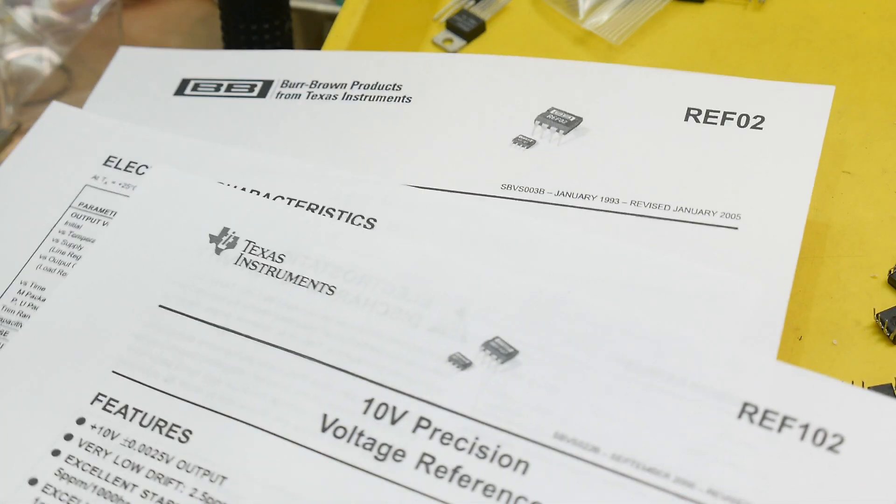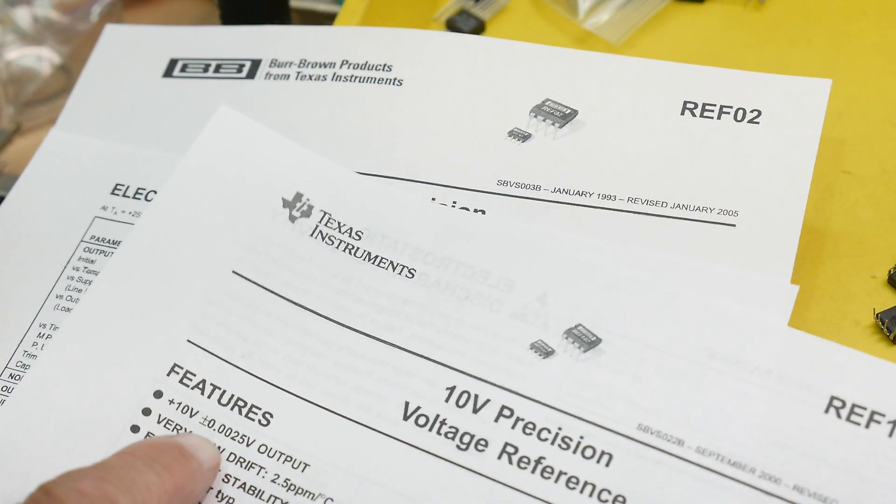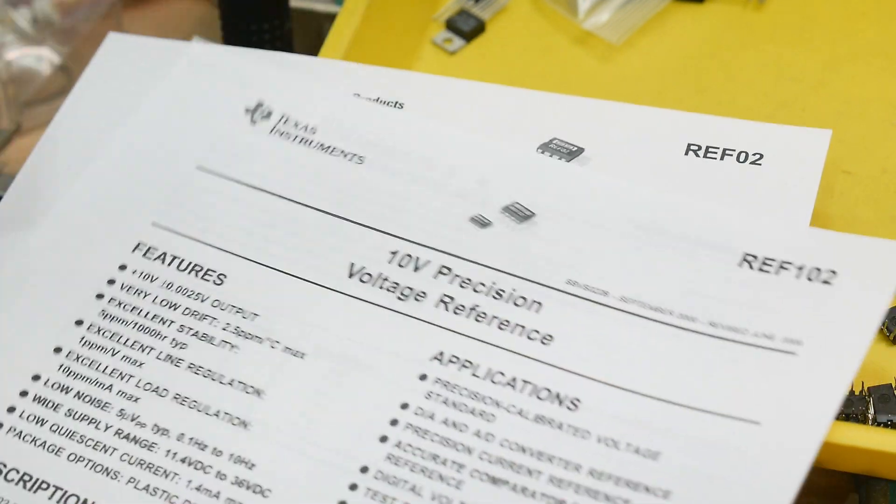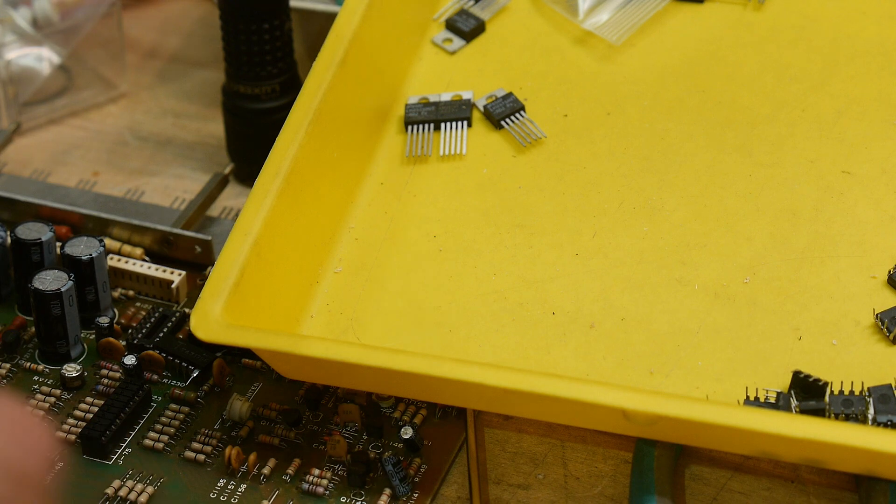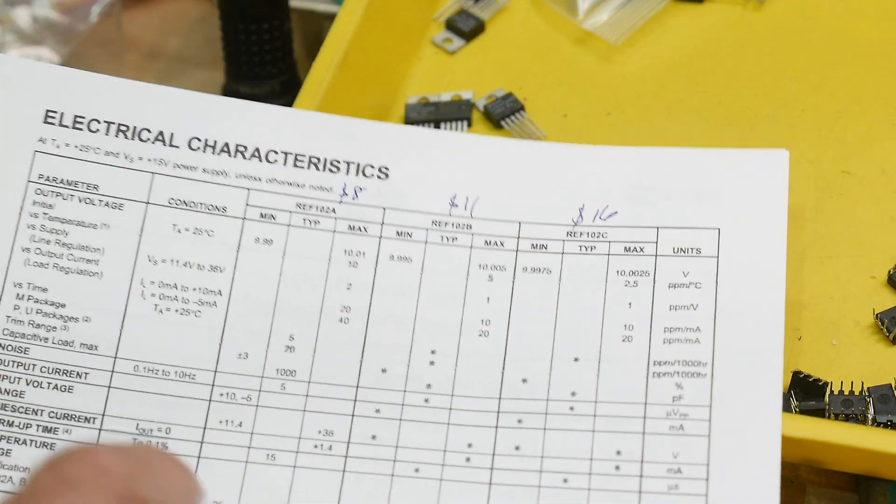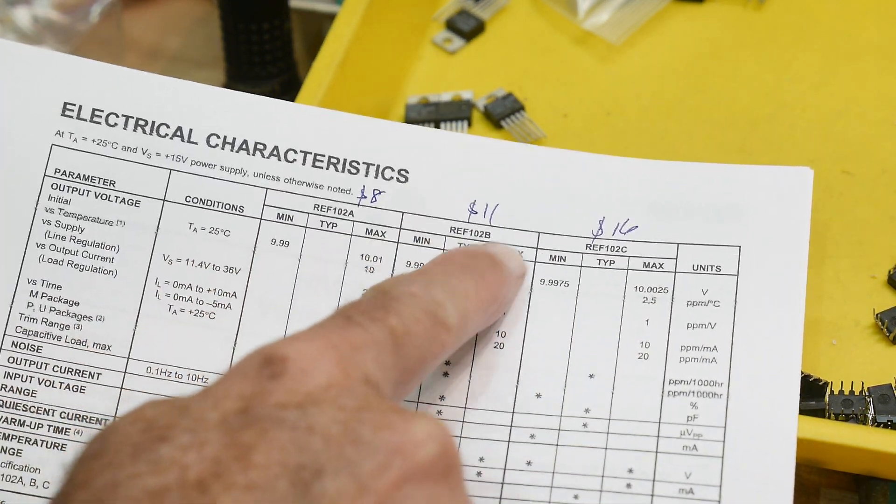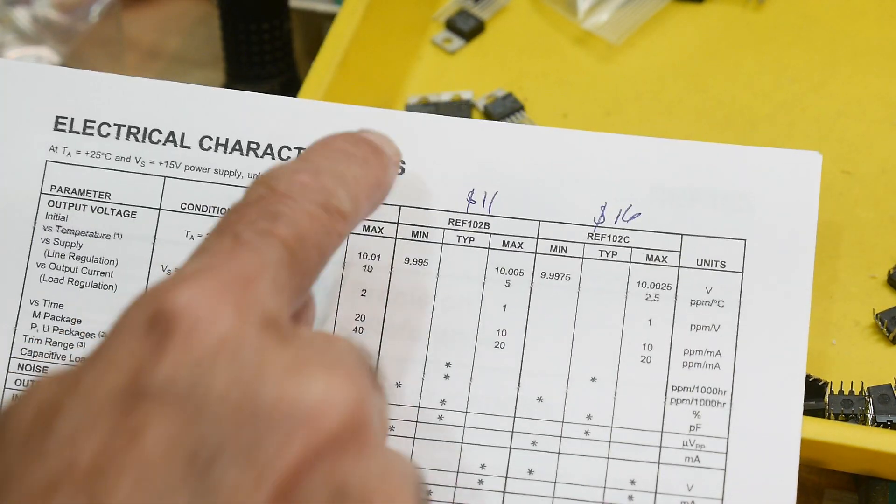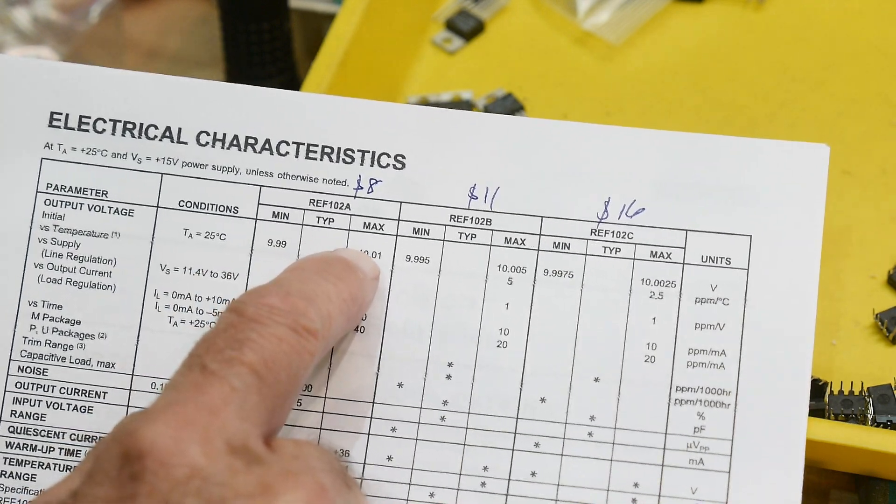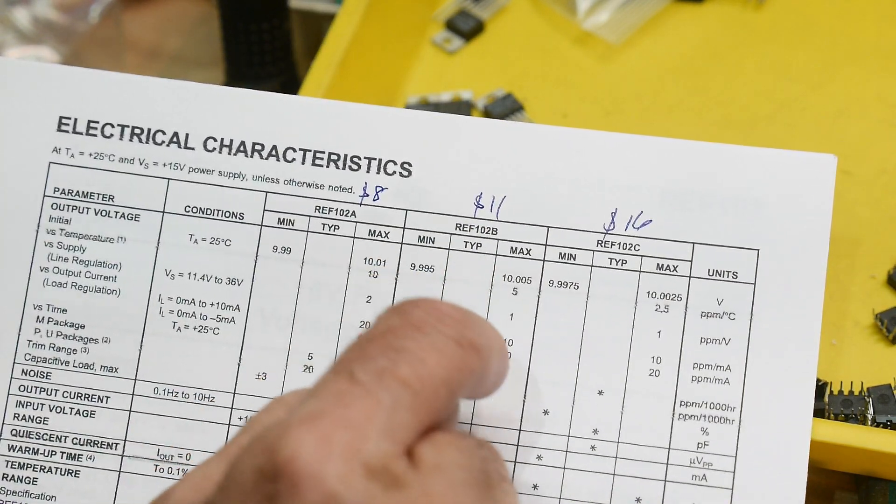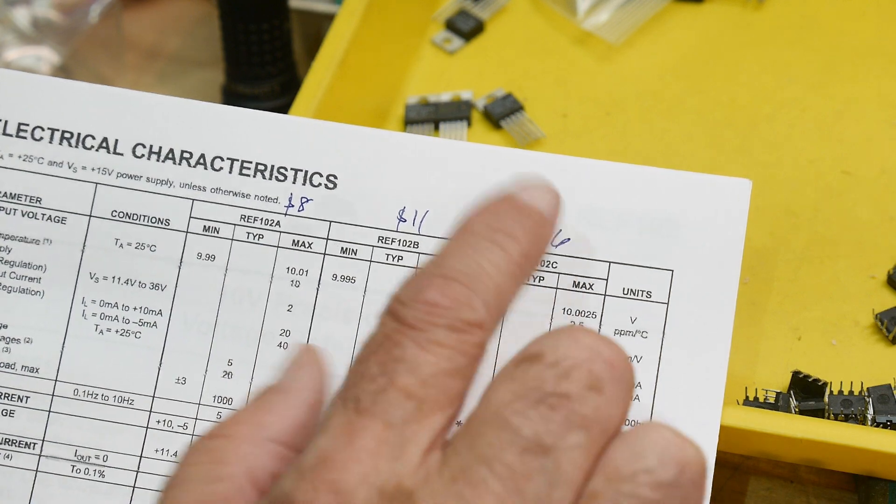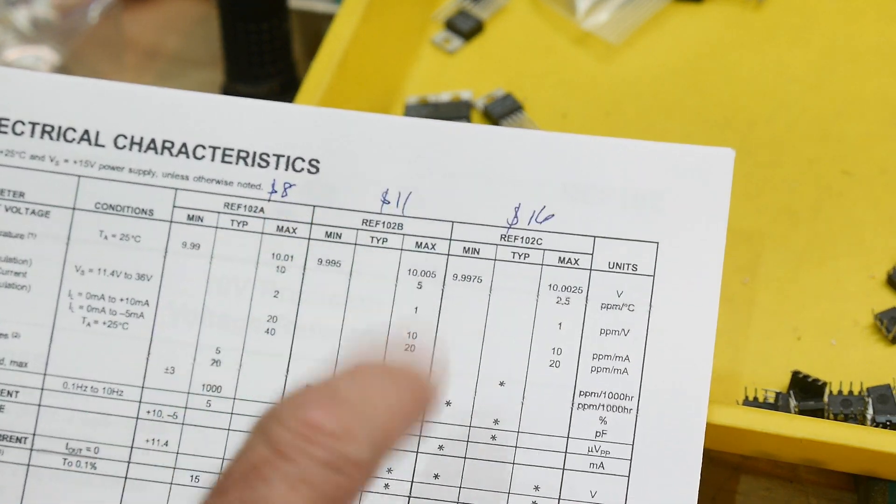Okay, and let's see here, what else can we find out about the data sheet? So on this one you have to be a little bit worried. On the front page it says 0.0025. You think great, I'll get the cheapest one, it'll be 0.0025. So if you go on to something like Digi-Key or something else, you will find there's three grades: there's the A grade, the B grade, and the C grade. And they're eight dollars, eleven dollars, and sixteen dollars. The A grade gives you 10.01, the B grade gives you 10.005, and the C grade gives you that 0.0025.